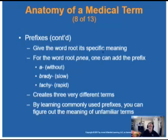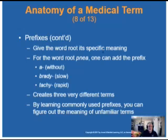Let's use the example word pnea, which we can agree means breathing. The prefix a in medical terminology means without, so apnea means without breathing — the patient's not breathing. Brady means slow, so bradypneic means a slow respiratory rate. In adults the normal rate per minute is 12 to 20, so bradypnea would be breathing less than 12 times per minute in an adult.